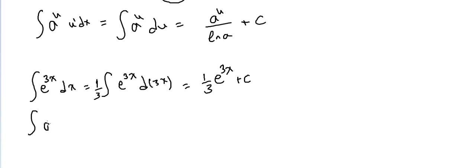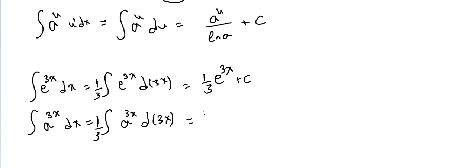What is the difference if we have the integral of a^(3x) dx? It will be equal to the integral of a^(3x) d(3x). The derivative of 3x is 3, so we divide by 3. The answer is 1/3 times the integral of a^u du, which is a^u over ln a. So the final answer is a^(3x) over (3·ln a) plus c.